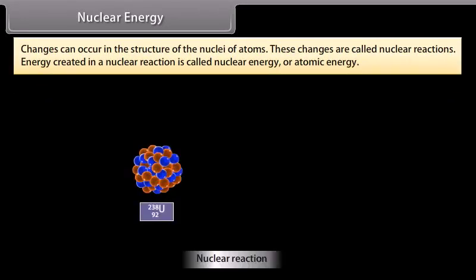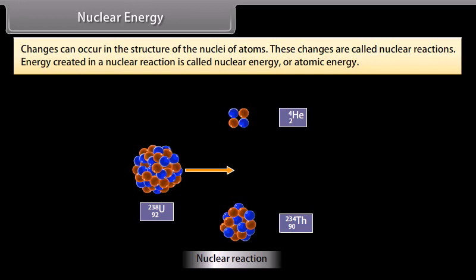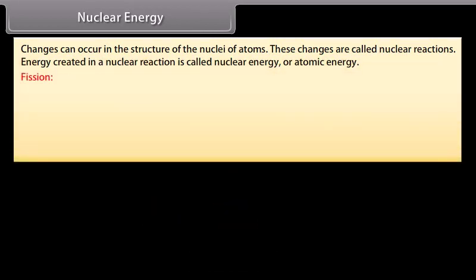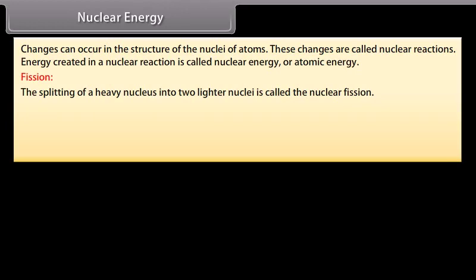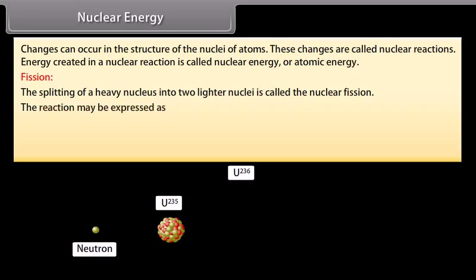Nuclear energy. Changes can occur in the structure of the nuclei of atoms. These changes are called nuclear reactions. Energy created in a nuclear reaction is called nuclear energy or atomic energy. Fission: the splitting of a heavy nucleus into two lighter nuclei is called the nuclear fission. When a slow neutron strikes a Uranium-235 nucleus, it is absorbed by the nucleus and an unstable isotope of uranium U-236 is formed which immediately breaks into two fragments, emitting two or three neutrons with release of enormous amount of energy. The reaction may be expressed as...